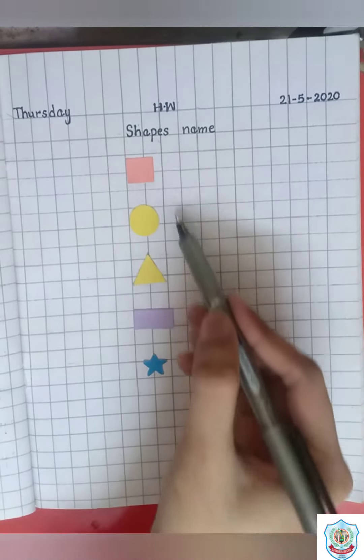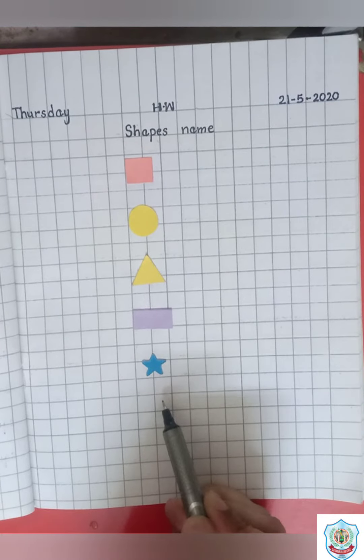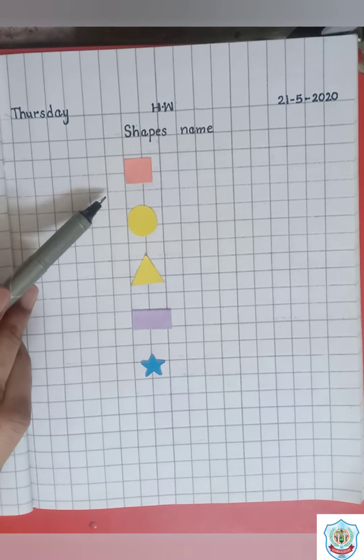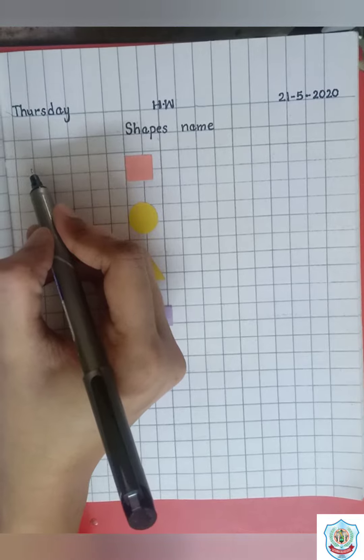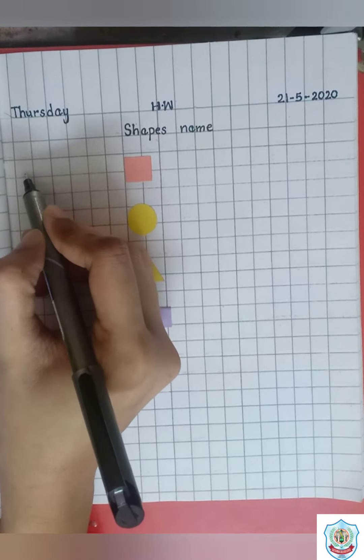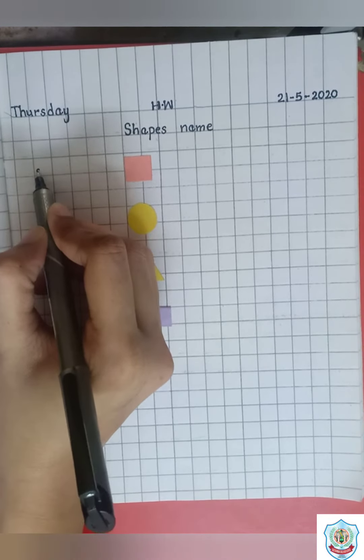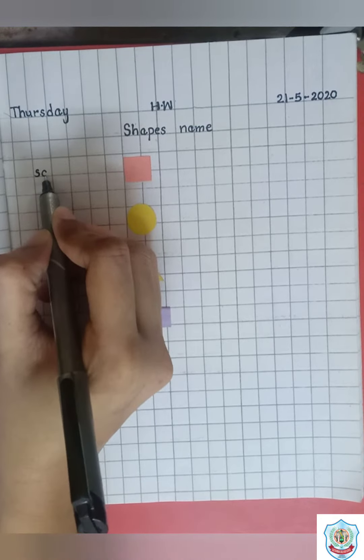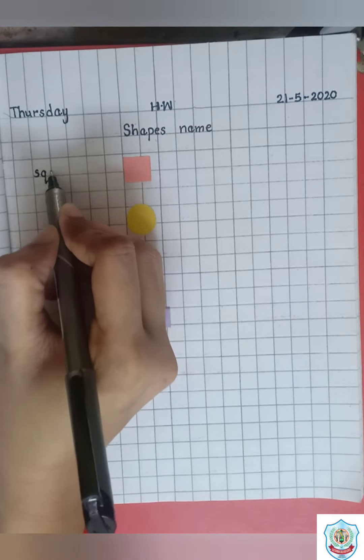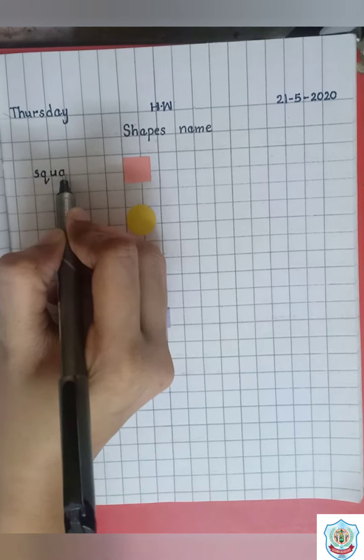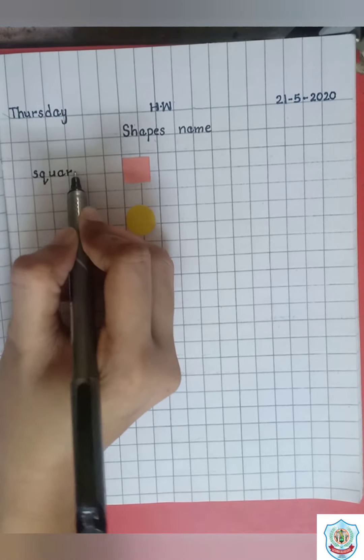Students, now write name of given shapes. It is square. Write here spell of square. S-Q-U-A-R-E. Square.